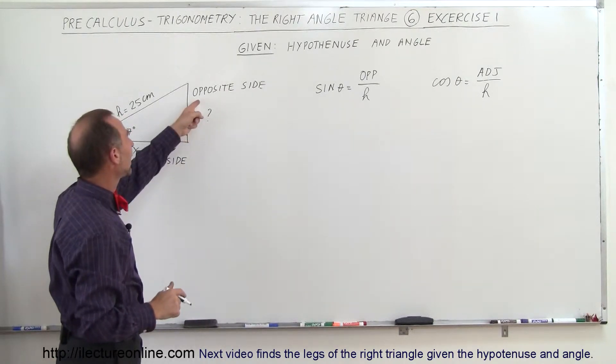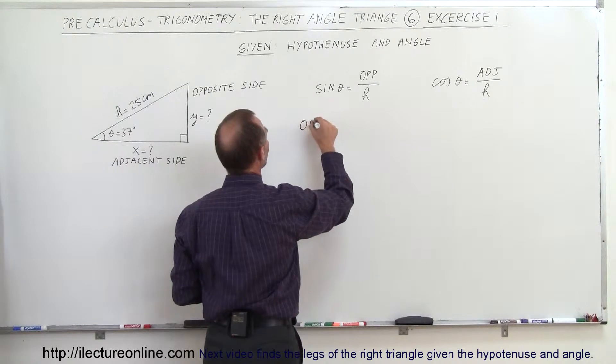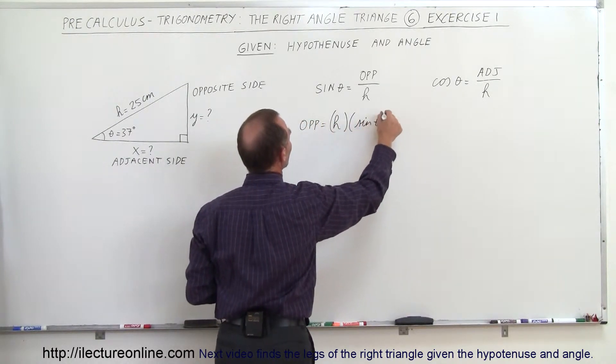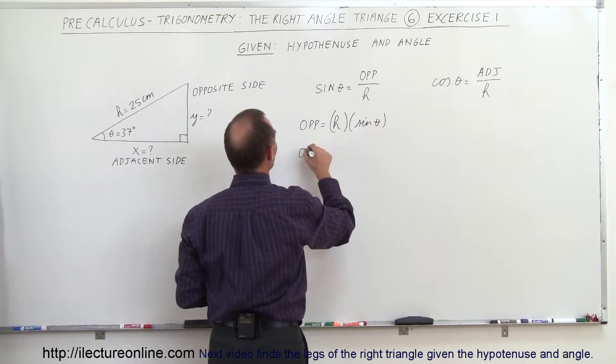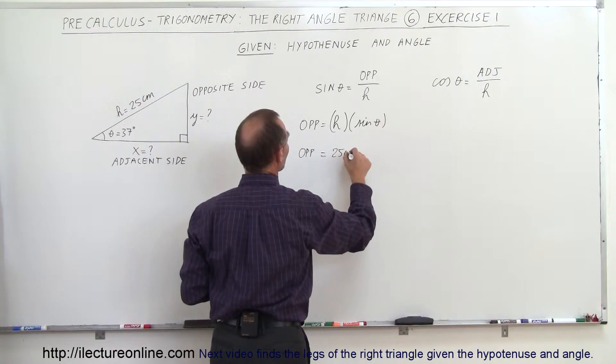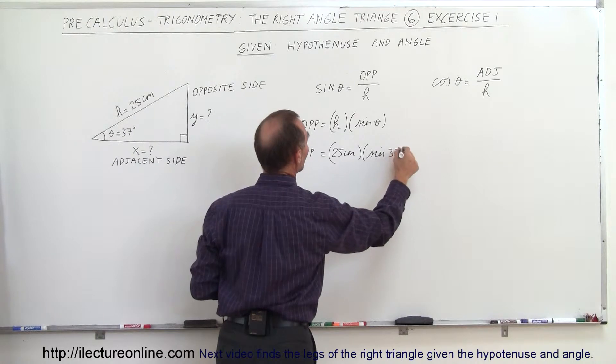So what I'm trying to find is the opposite side. The opposite side then is equal to the hypotenuse times the sine of the angle theta. So in this case, the opposite side is equal to H, which is 25 centimeters, times the sine of the angle 37 degrees.